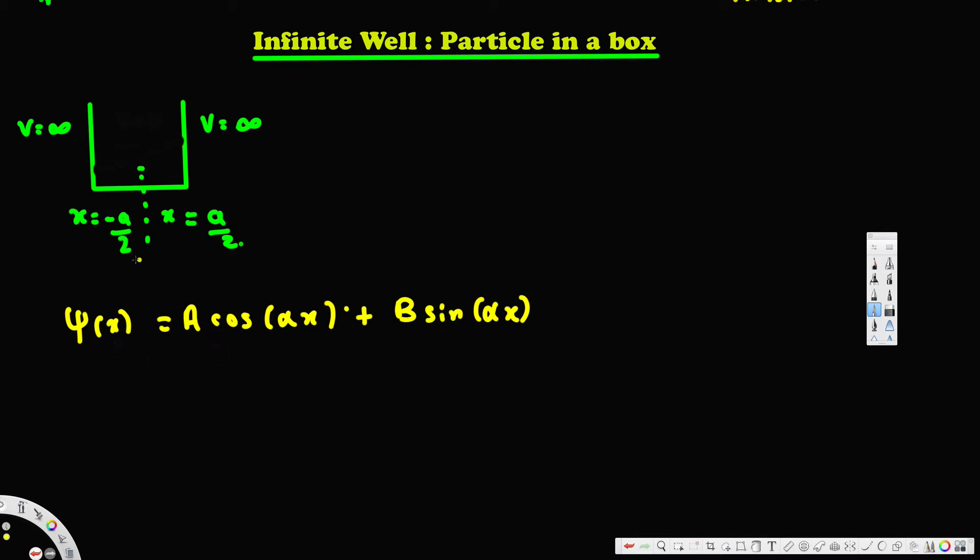Now when we solve this one, we have to apply the initial conditions. Initial conditions are x = -a/2 and x = a/2. So we have to apply that one instead of x.